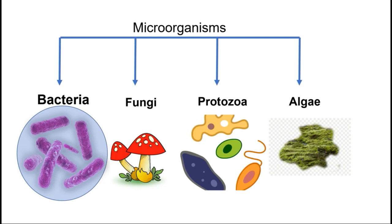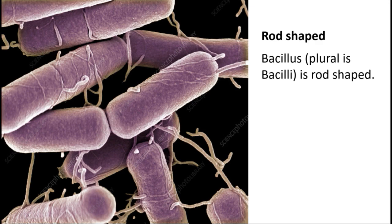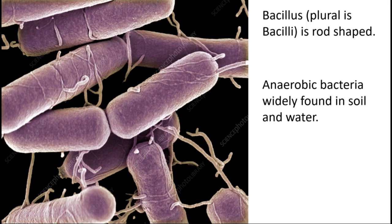Bacteria are categorized into types based on shape. The first type is rod-shaped bacteria, called Bacillus — singular: bacillus, plural: bacilli. It does not use oxygen to live, so it is called anaerobic bacteria. It is found in the soil and in water. Some of these bacteria are not friendly to humans, while some coexist fine with us. In fact, people say there are as many bacterial cells — sometimes even more — in our body than our own cells.